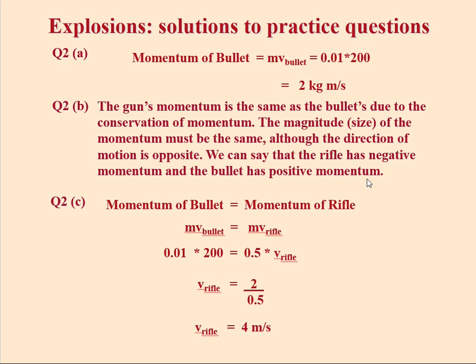We can say that the rifle has negative momentum and the bullet has positive momentum. In fact, you could say it the other way around - the bullet has negative momentum and the rifle has positive momentum. It doesn't matter which way you say it, they've got the same size but just in a different direction.